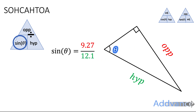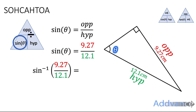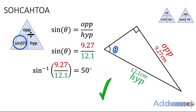Put the numbers in and now we do inverse sine — sine minus one — shift sine on your calculator like this, and your calculator will tell you the answer is 50.006352 degrees. We round that to one decimal place, or just the nearest whole number as the case may be. And here is the final answer of 50 degrees. Just make sure when you tap this in that you can get the right answer.